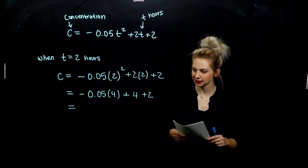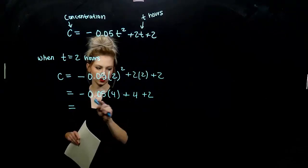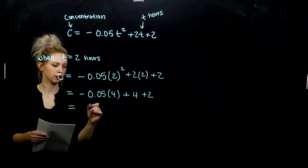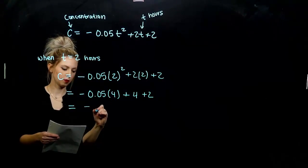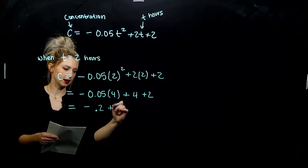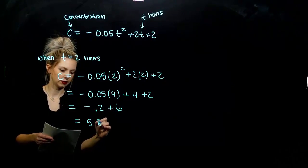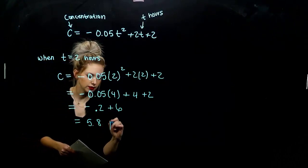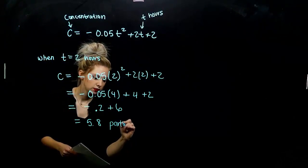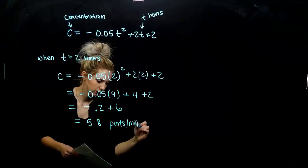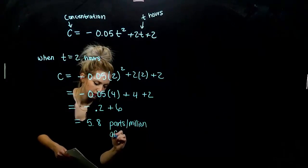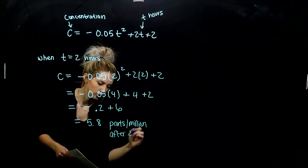Multiplication happens next. Multiplication, then we can start adding and subtracting together. So this guy is going to be negative 0.2, and we're adding 6 to it. So 5.8. And this is parts per million after two hours.